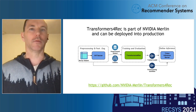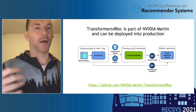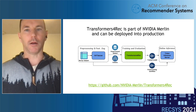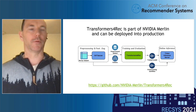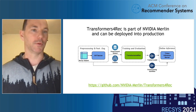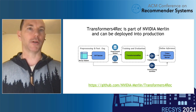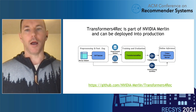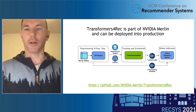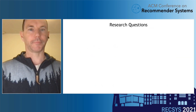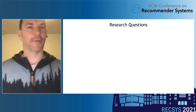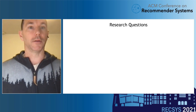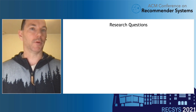Merlin includes NVTabular for feature engineering and preprocessing, and a training and inference server for production-level inference including preprocessing and feature engineering. It's designed to be accessible to researchers and usable by industry practitioners. We are continuing to iterate and develop this library. Now I'll hand it off to Gabriel to talk about the research we did with this library.